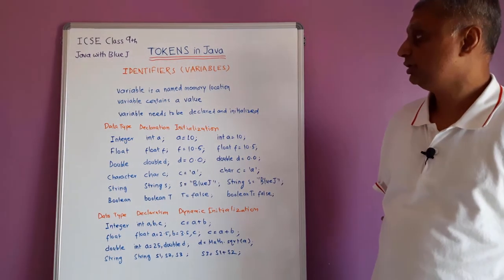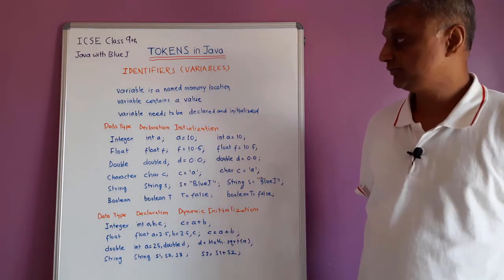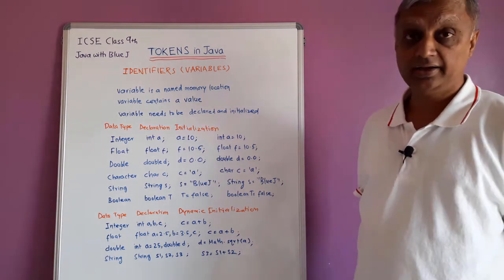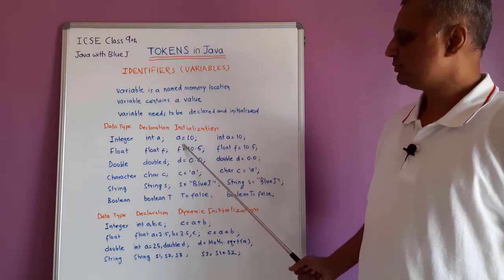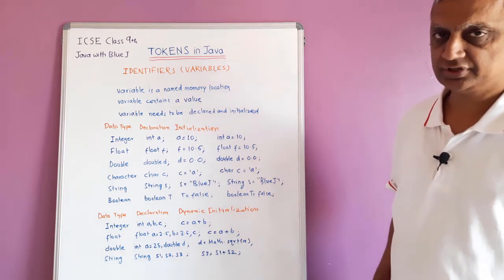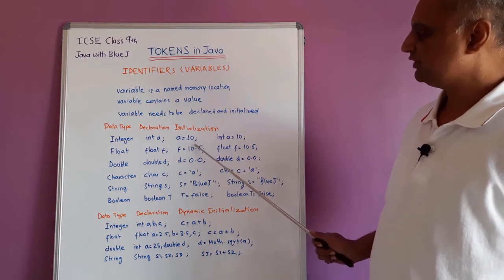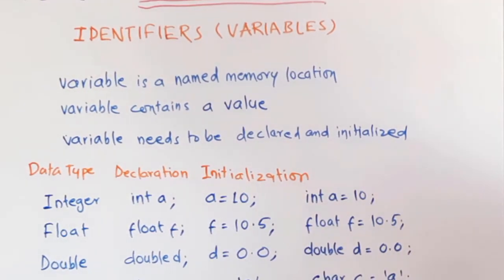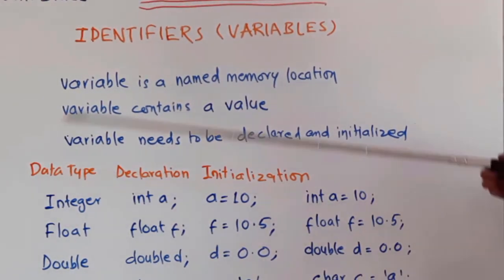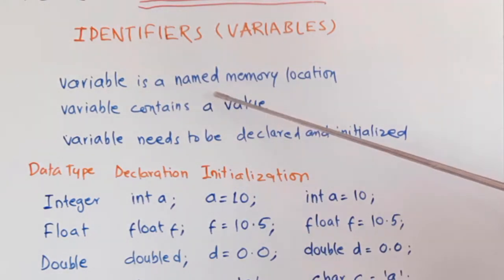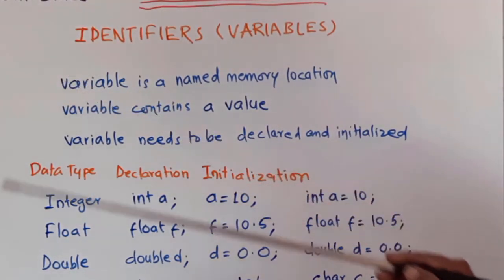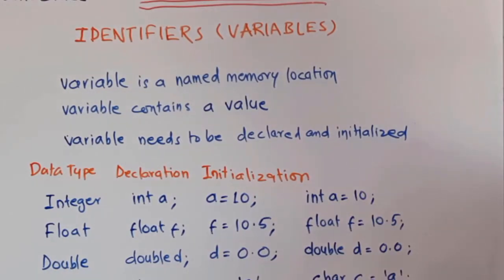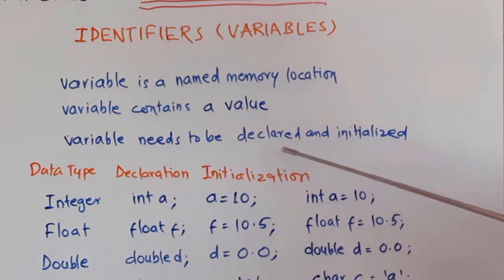Now let us see what a variable is in Java — what are the different types, how they are declared and initialized. A variable is a named memory location. Whenever you want to store any value in Java, you need some space — that space is created using a variable. Variable creates a space in memory and has a name so you can access that space. Variables contain a value and need to be declared and initialized.